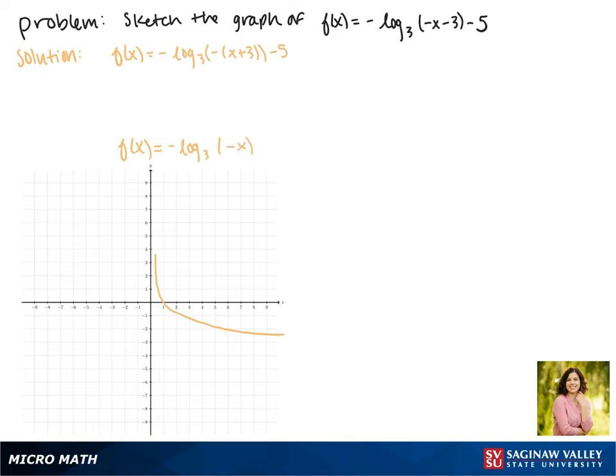Now when we take the log of a negative, that tells us to reflect across the y-axis. Now we pass through the point negative 1, 0.